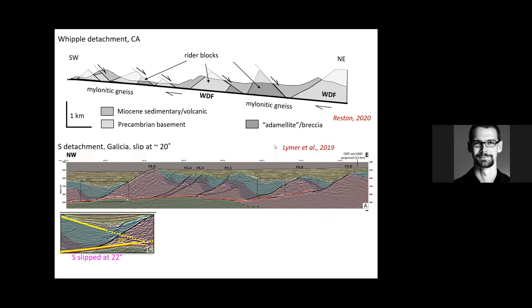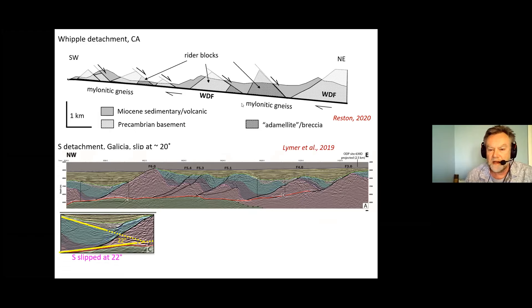This is a section through the Whipple detachment, one of the most famous low angle normal faults there is and you can see that above the detachment fault we have these rider blocks which have probably been rafted up and out with the footwall rather than sliding down it. I think we need to think of these things as rafted blocks rather than rider blocks in many cases although perhaps not always.